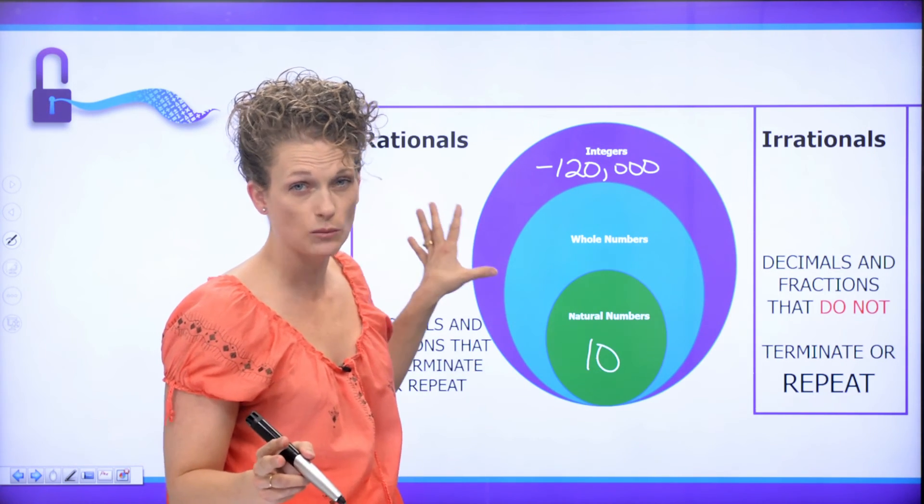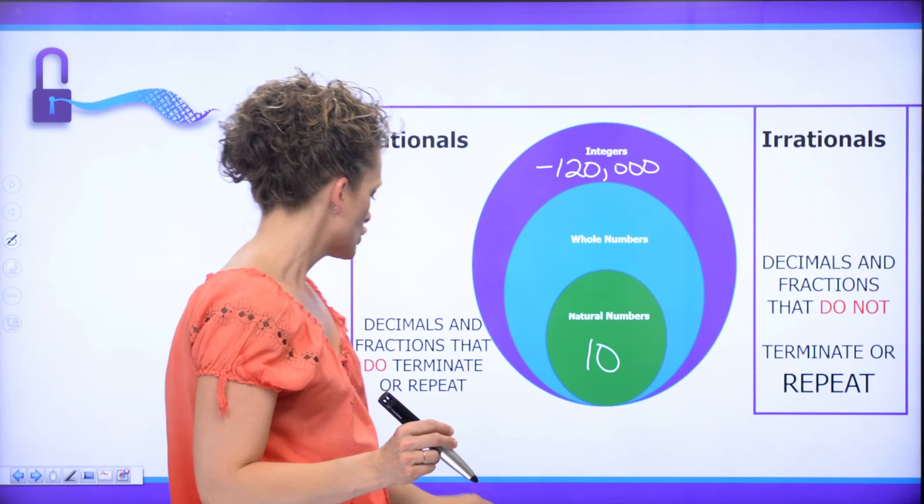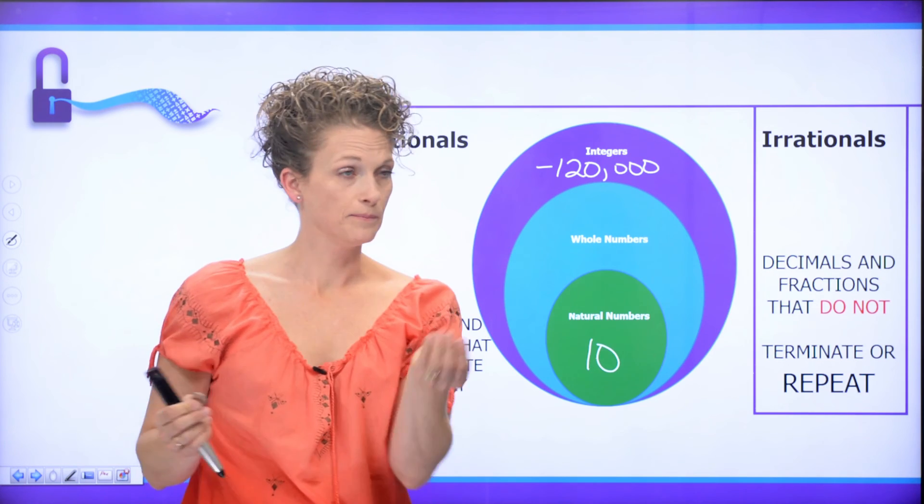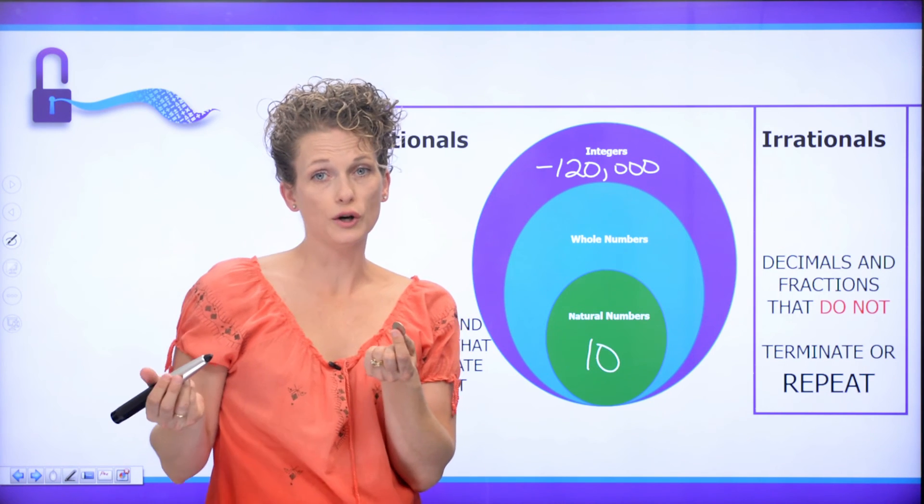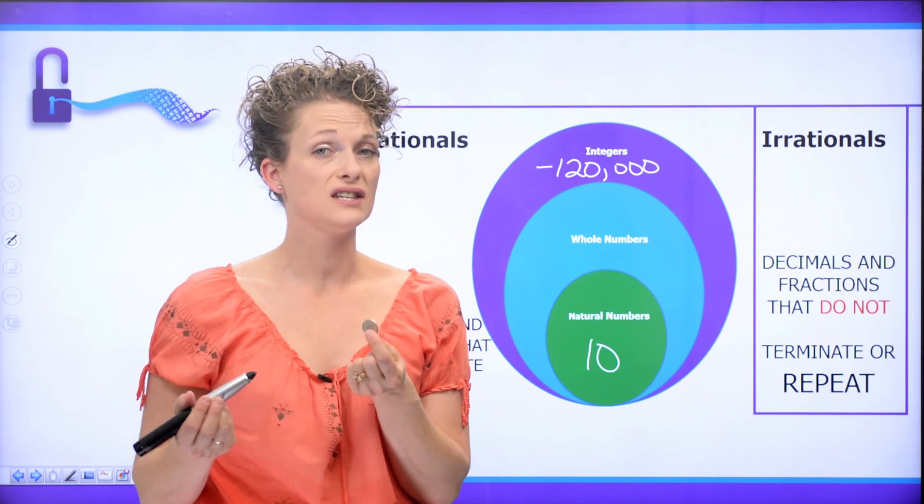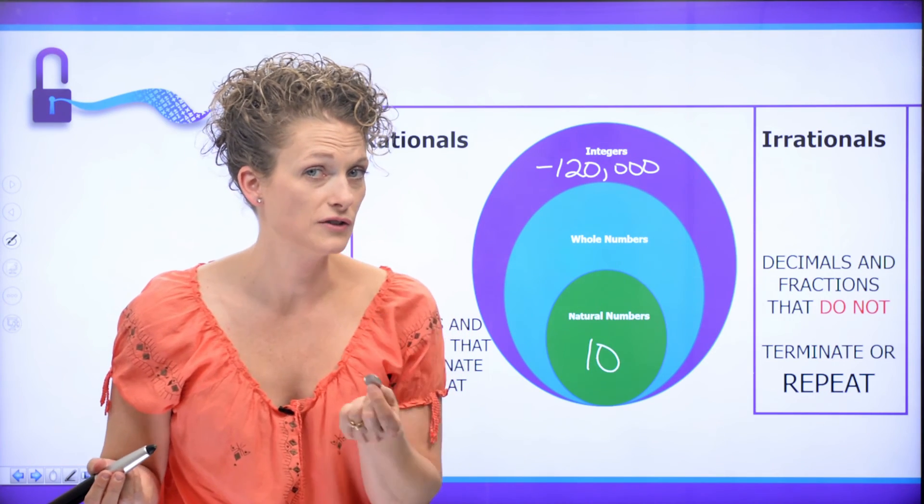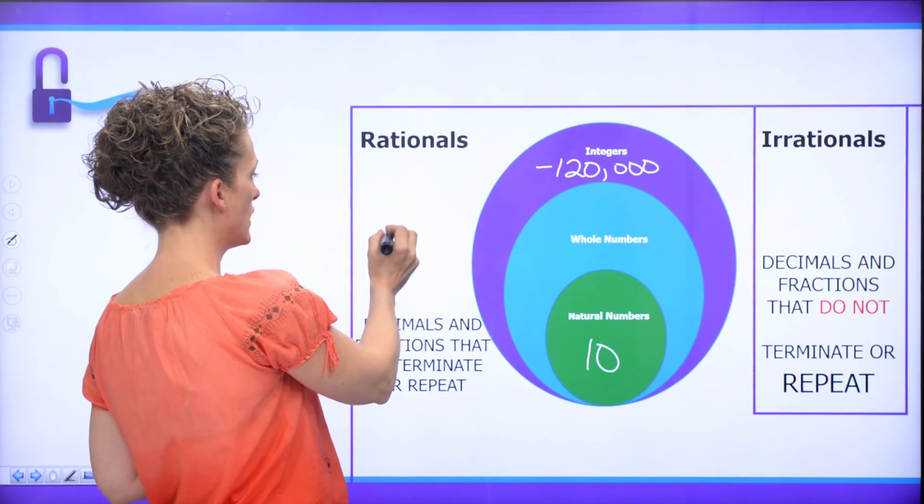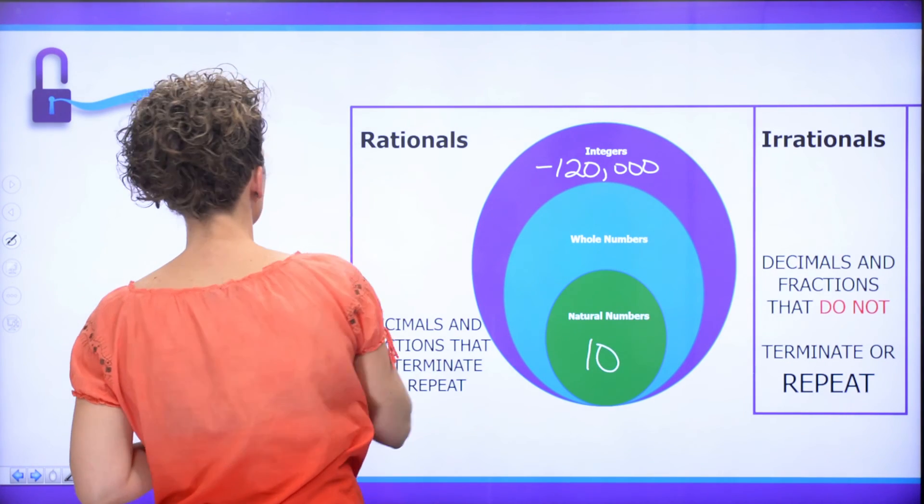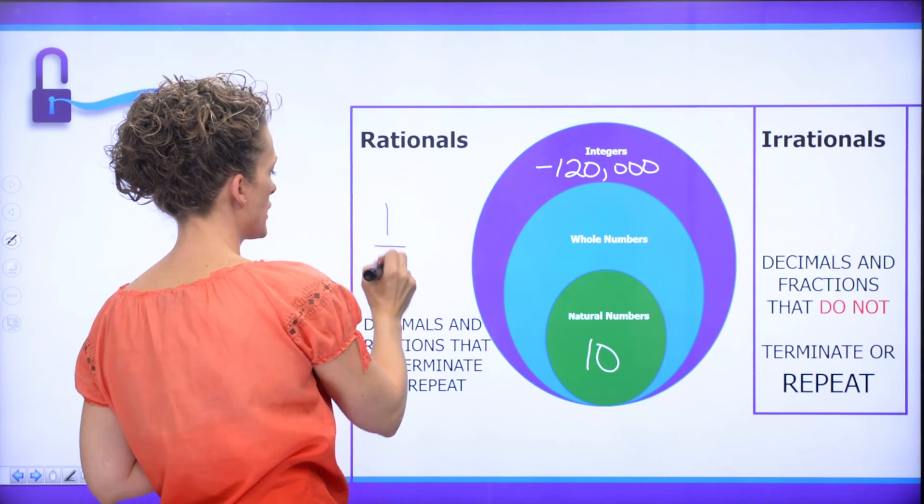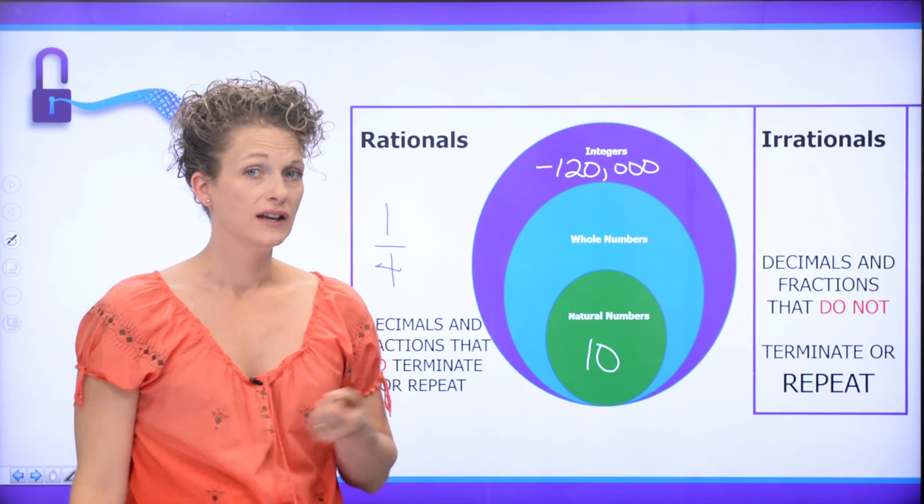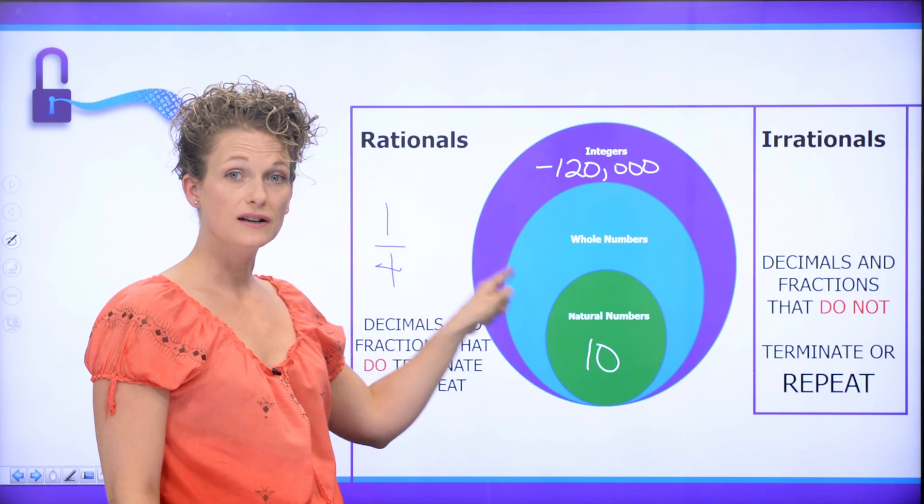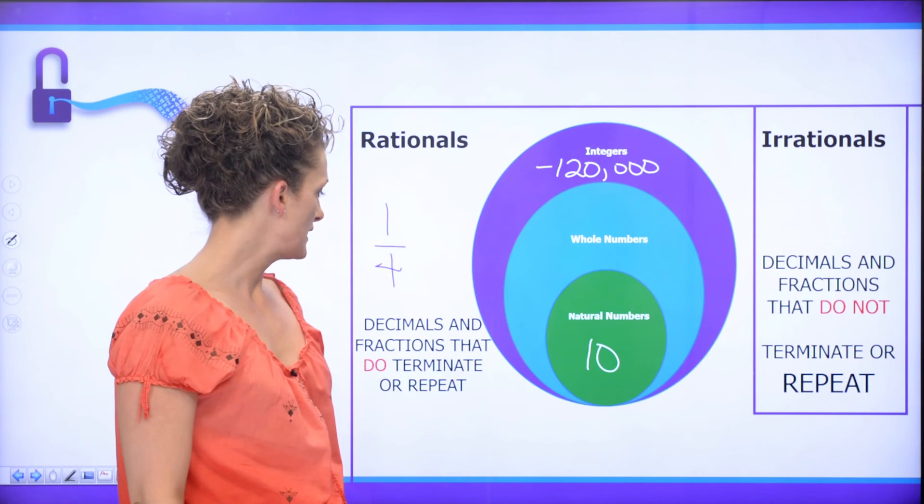The rational numbers will live somewhere inside this rectangle. So I also have a quarter or a dime. Now a quarter, it's called a quarter. And the reason it's called a quarter is because it's one-fourth of a dollar. It takes four quarters to make a dollar. So if I have one, I have one-fourth. So if I have one-fourth, that's a fraction. And fractions live in this area on the outside of these circles.